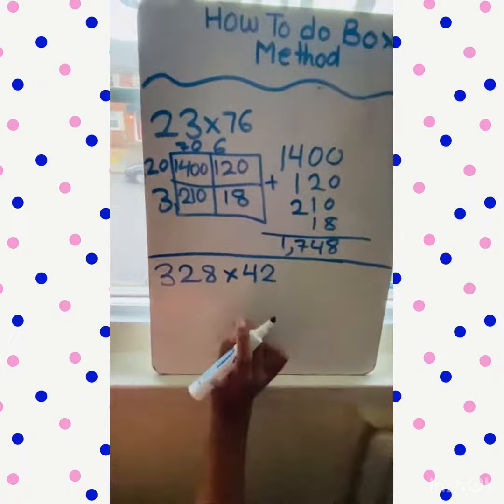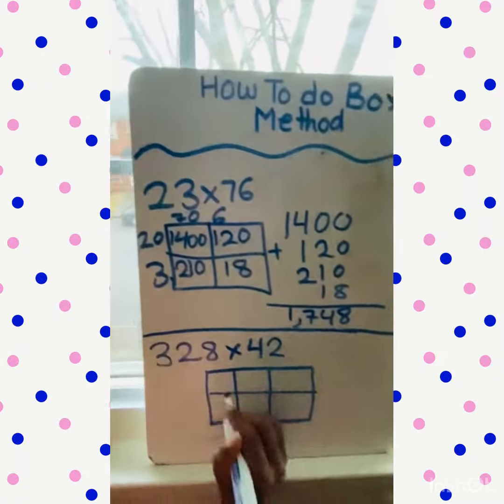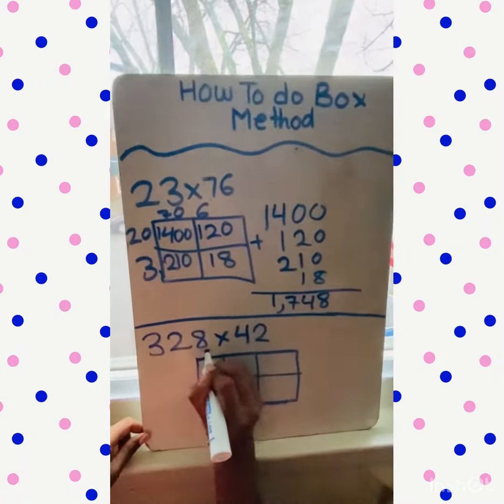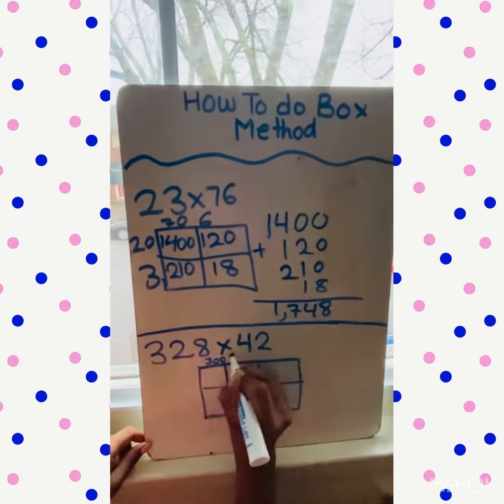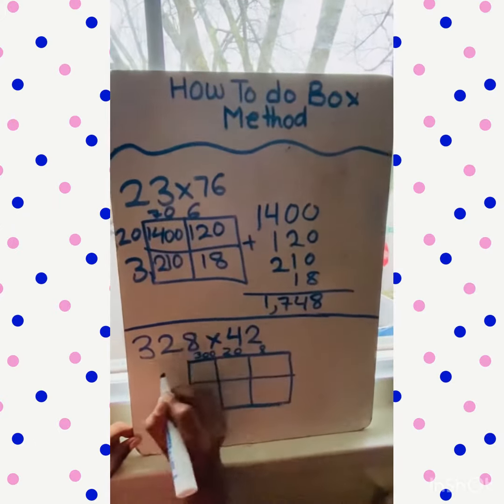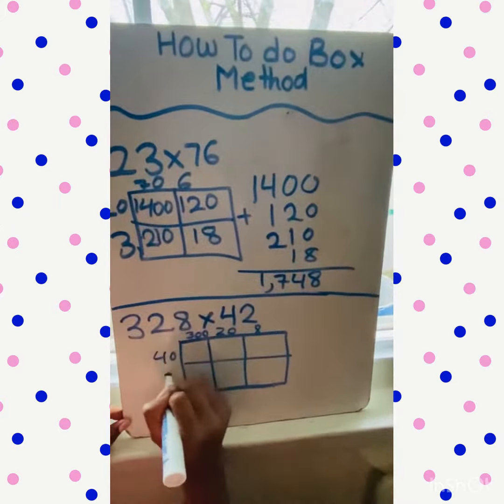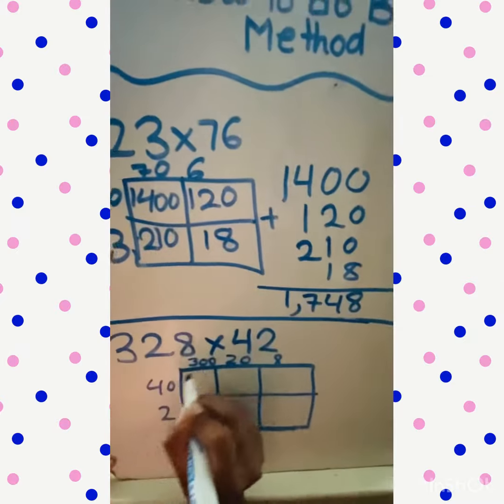Now after we draw the box, we have to split it up, which is 328 and 42. So multiply 40 times 300, which is 12000.